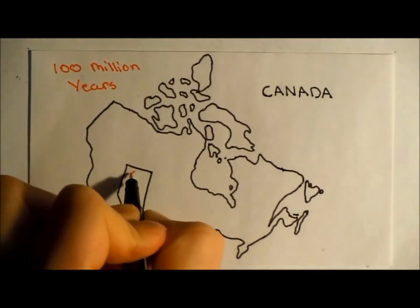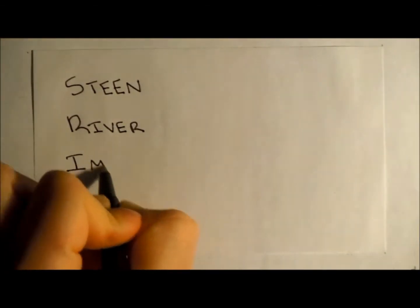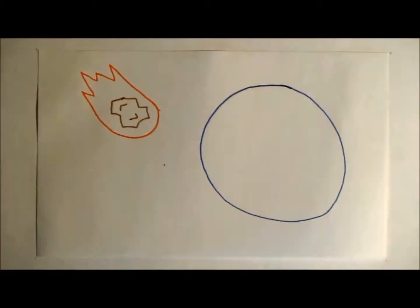Around 100 million years ago, something big hit close to home. In northwestern Alberta lies the Steen River impact structure, a crater nearly 25 kilometers across that formed when an extraterrestrial rock, or meteorite, hit the Earth.